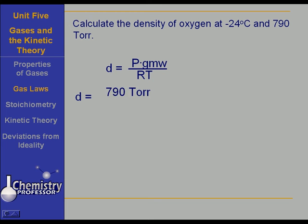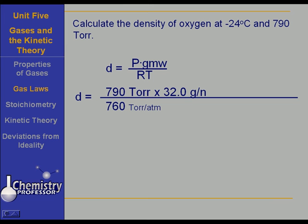So the density uses 790 torr as pressure. But if we use R as 0.0821 liter atmospheres per mole Kelvin, we can't use torr as pressure — we've got to change it to atmospheres. So we take our 790 torr and convert it to atmospheres, times 32 grams per mole as the gram molecular weight of oxygen. In the denominator we have 0.0821 liter atmospheres per mole Kelvin — that's the universal gas constant, so memorize it — times 249 K.